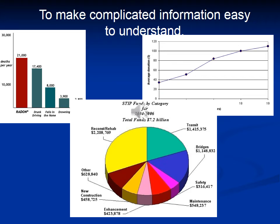Now you could do the exact same thing through text, but which would be easier? If you were to write out a paragraph of text explaining that pie graph, or if you were simply to show it through an image and then explain it — which would make more sense to the reader? Obviously, using the graphic is going to make a lot more sense. So if it's really complicated information, we want to use graphics as much as possible.